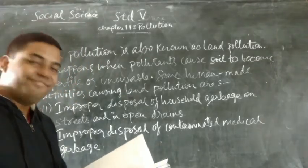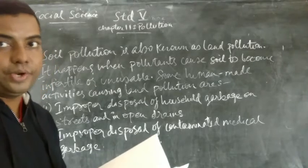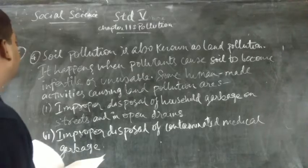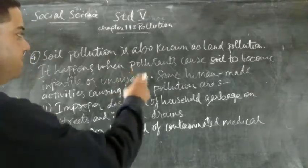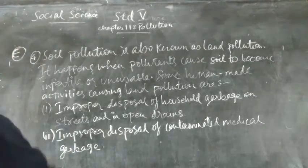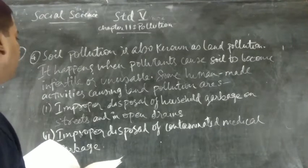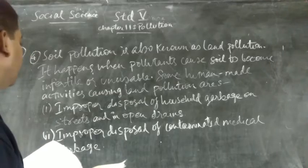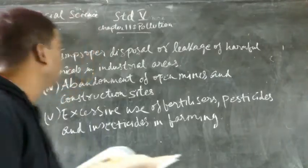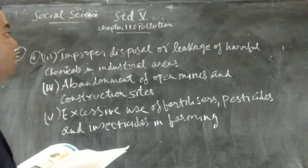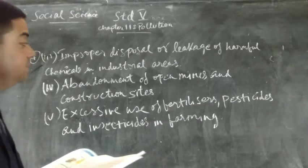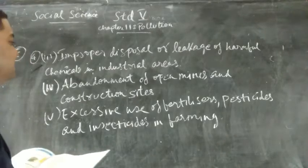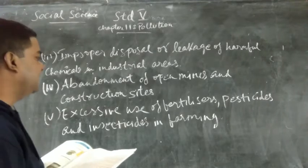Now we will see question number 4: define soil pollution and list how we contribute to it. Soil pollution is also known as land pollution. It happens when pollutants cause soil to become infertile or unusable. Some human-based activities causing land pollution are: point 1, improper disposal of household garbage on streets and in open areas; point 2, improper disposal of contaminated medical garbage; point 3, improper disposal or leakage of harmful chemicals in industrial areas; point 4, abandonment of open mines and construction sites; and point 5, excessive use of fertilizers, pesticides, and insecticides.